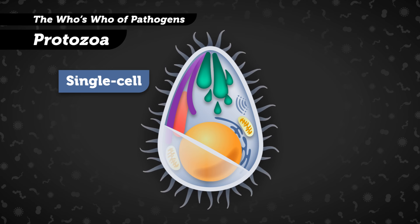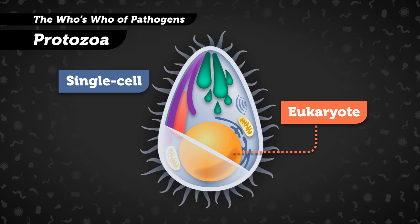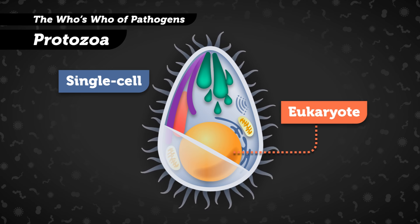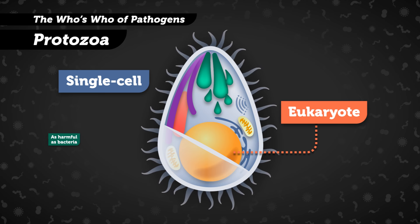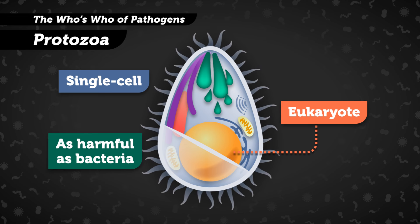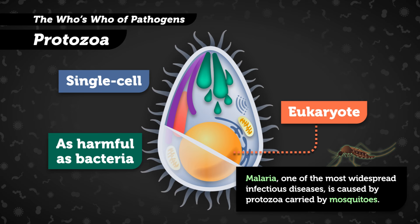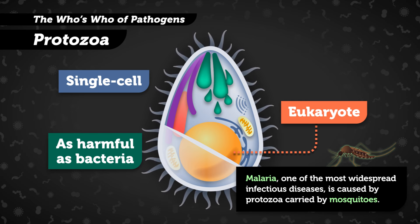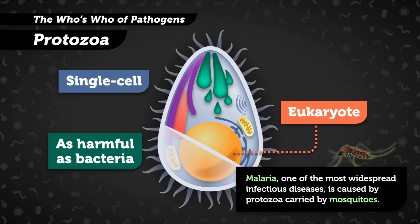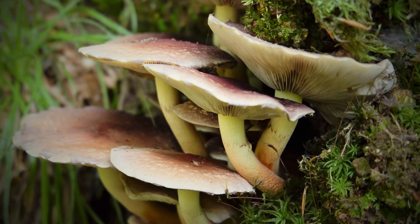Protozoa, the next microbes on our list, are a little more like us. They're single-celled organisms, but they're eukaryotes, which means they have a nucleus like our cells do, and they're undoubtedly alive. When they get into our bodies, they can harm us in ways similar to how bacteria can. One of the most widespread infectious diseases, malaria, is caused by protozoa carried by mosquitoes.